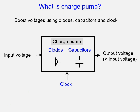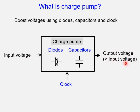What is a charge pump? A charge pump boosts voltages using diodes, capacitors, and clock. A charge pump takes an input voltage and produces an output voltage which is higher than the input voltage, using diodes and capacitors with a clock.